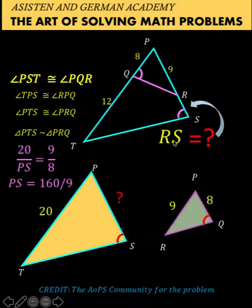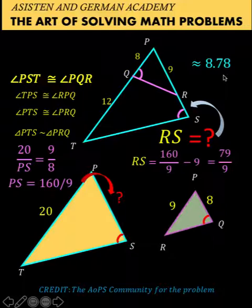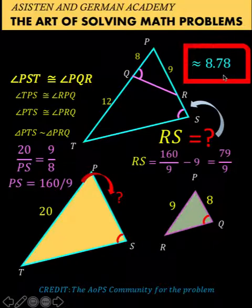Our goal is to find the measure of RS. We know that the length PS is 160 over 9. We know that the length of segment PR is 9. Then we can now compute for RS because RS is the difference between side PS, and the measure of side PS is 160 over 9 minus this line segment PR with a length of 9 units. And performing the subtraction, we have 160 over 9 minus 9 times 9 is 81. So 160 minus 81 is 79. Copy the denominator 9. And this value is approximately equal to 8.78 units for the measure of side RS.